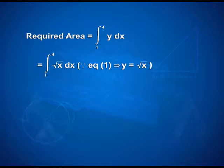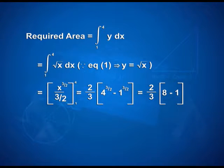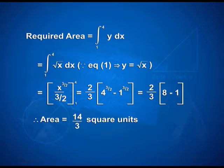Since the equation gives us y is equal to square root of x, that is equal to x to the power 3/2 divided by 3/2 with limits 1 and 4. On applying limits, we have 2/3 into (4 to the power 3/2 minus 1 to the power 3/2), that is equal to 2/3 into (8 minus 1), which gives us 14/3 square units as the area.